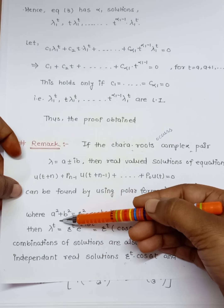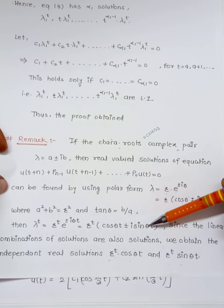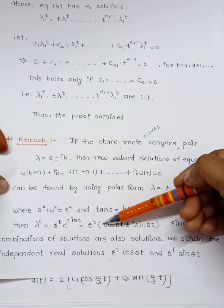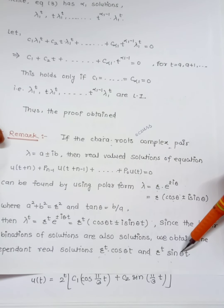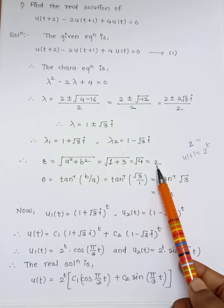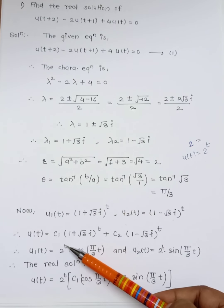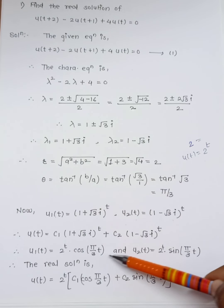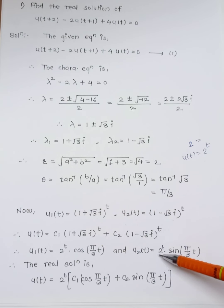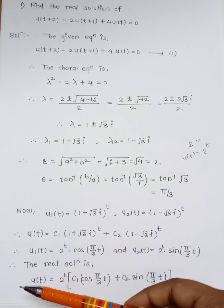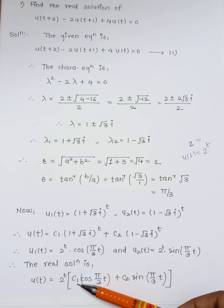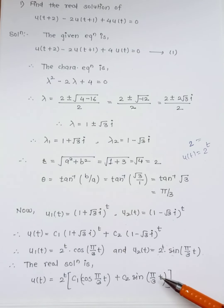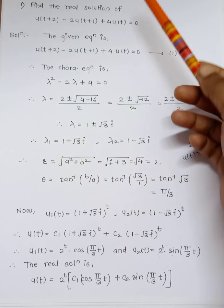The formula used is: λ^t = r^t·(cos θt + i·sin θt), so the real solutions are r^t·cos θt and r^t·sin θt. With r = 2 and θ = π/3, we have u₁(t) = 2^t·cos(πt/3) and u₂(t) = 2^t·sin(πt/3). Therefore the real general solution is: u(t) = 2^t·[c₁·cos(πt/3) + c₂·sin(πt/3)].